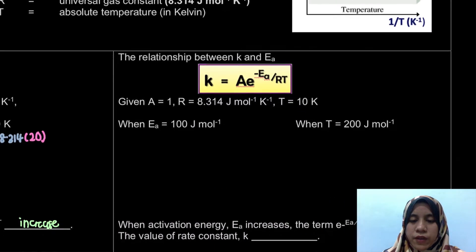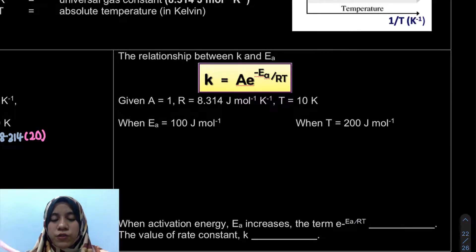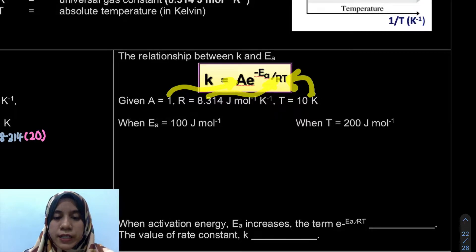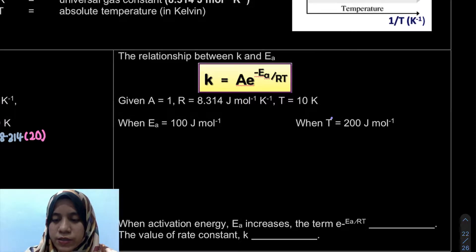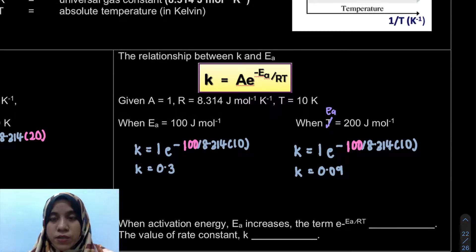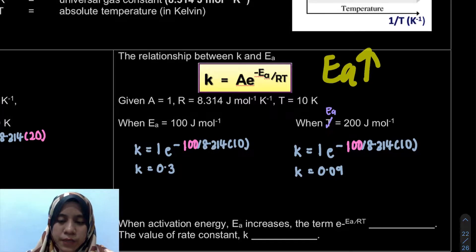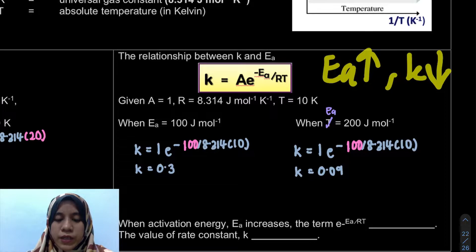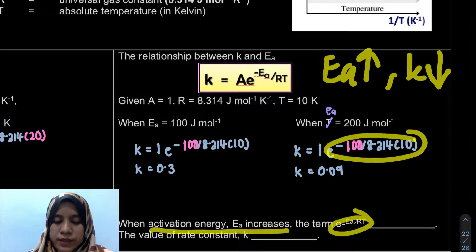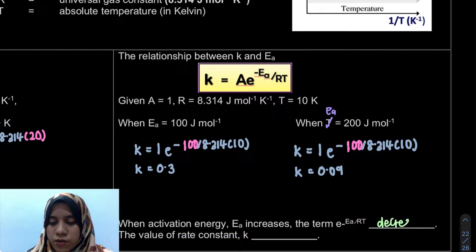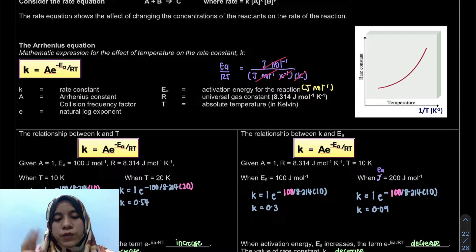Next, we look at the effect of activation energy on the rate constant. Keeping A = 1, R = 8.314, and T = 10 K constant, we change the activation energy. When Ea = 100 J, we get one value of K; when Ea = 200 J, K decreases. So when activation energy increases, the term e^(−Ea/RT) decreases, and hence the rate constant K also decreases. In summary, the two factors affecting the rate constant are temperature and activation energy.